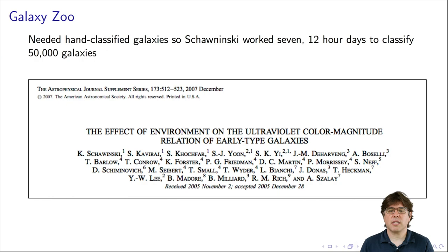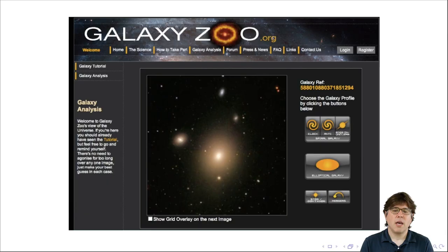This required hand-classifying the galaxies, whether they were spiral or elliptical, because that was something that was not possible to do with a computer at the time. A graduate student named Kevin Schawinski worked very hard and hand-classified 50,000 galaxies. It required him to work seven 12-hour days. He classified those galaxies, and they wrote this paper using the classifications that he made. 50,000 galaxies may sound like a lot, but it turns out that's only about 5% of the million galaxies that are available in the Sloan Digital Sky Survey. If you want to analyze all of the galaxies, going with this approach is not going to work. You need something that's more scalable.